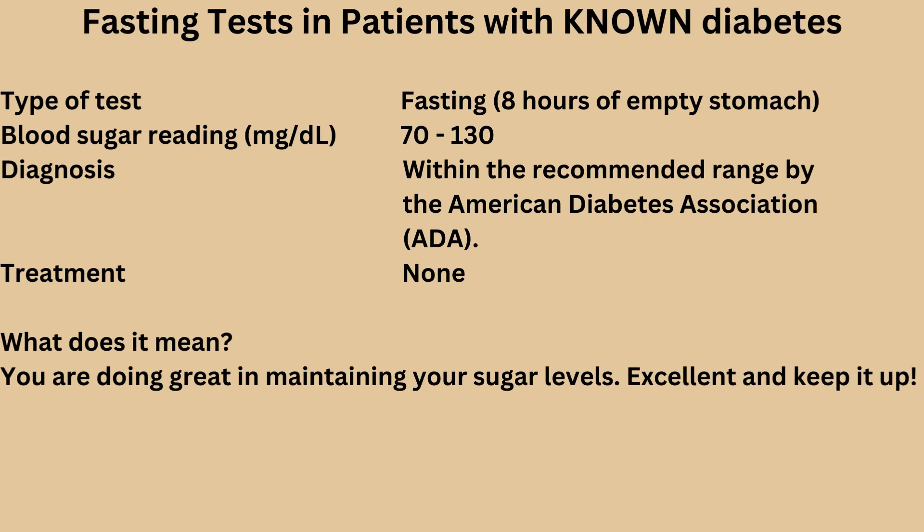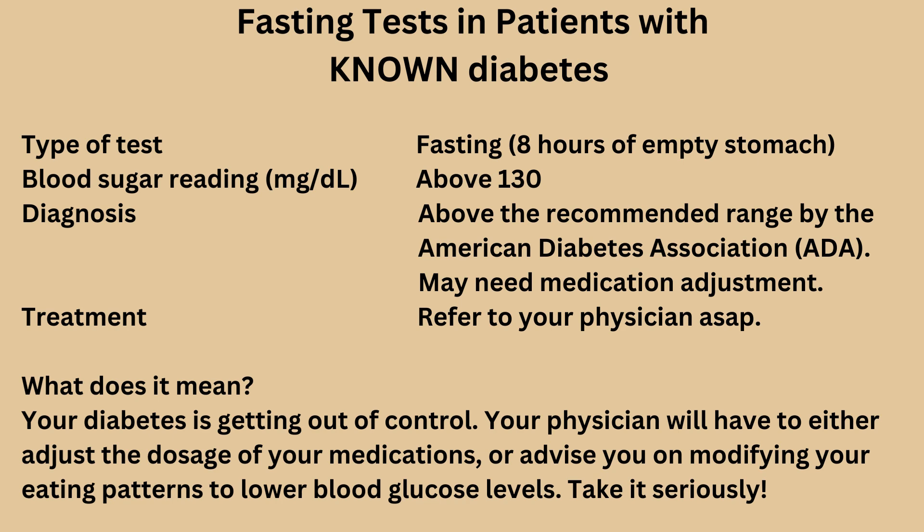If you are a patient with known diabetes and you took a fasting blood glucose test and got a reading between 70 and 130 milligrams per deciliter, then you are within the range recommended by the ADA. This means that you are doing great in maintaining your sugar levels — excellent, keep it up.